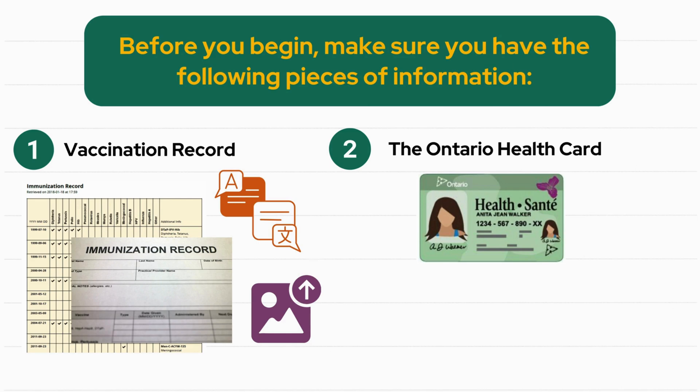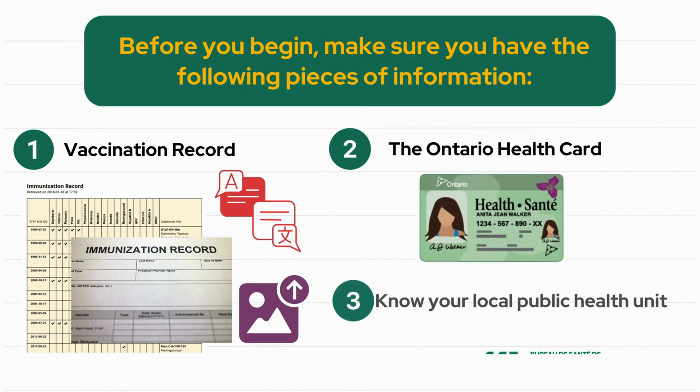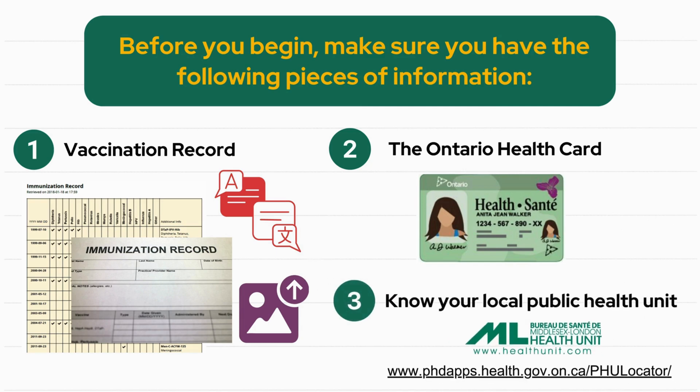Please note that students 16 years of age or older should access their own records online through ICON. The third is to know your local public health unit and ensure you are accessing ICON through their website. To confirm your health unit, visit the Ministry of Health's public health unit locator — the URL is shown on the screen.